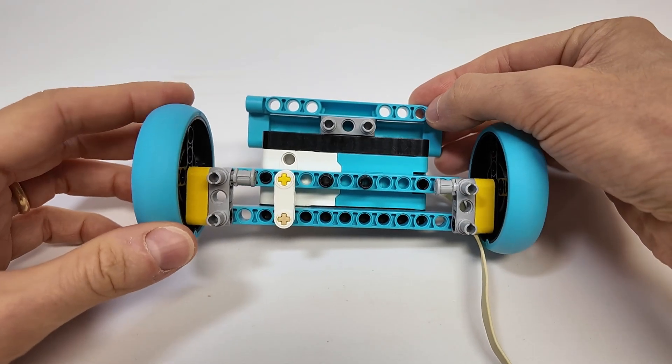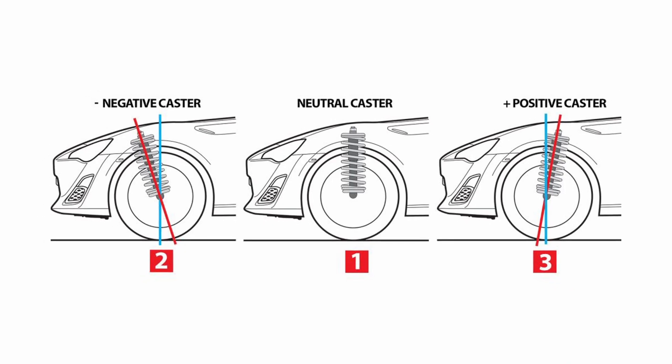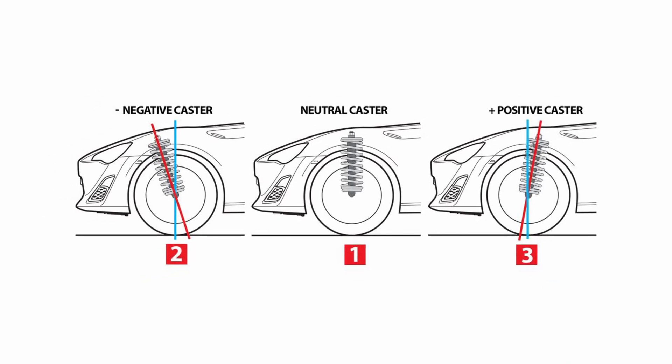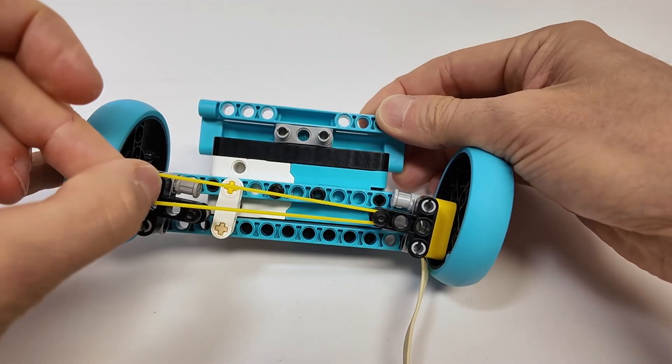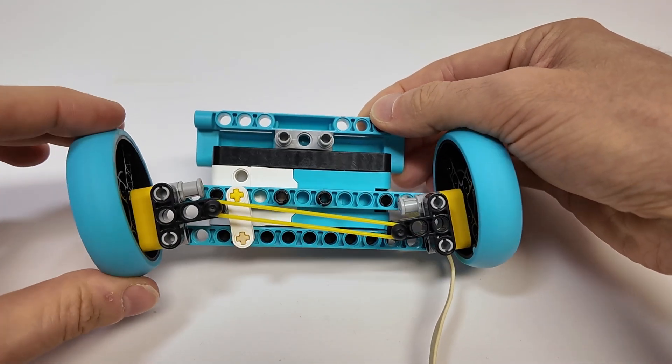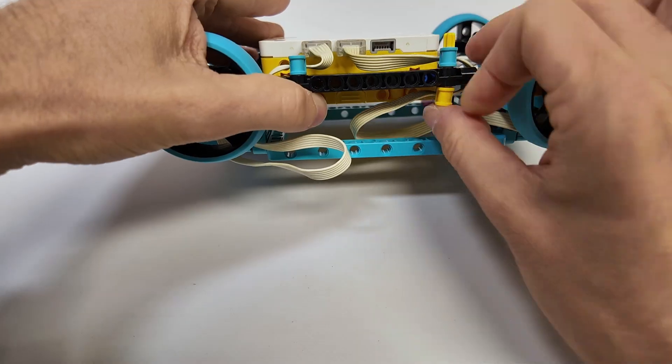Now, in real cars, the steering system is designed so the wheels naturally straighten themselves out after a turn. That's called the caster effect. Since our simple LEGO steering mechanism cannot center itself, I needed a workaround. That's why I added this rubber band. It removes the play almost completely.